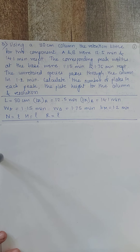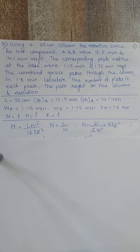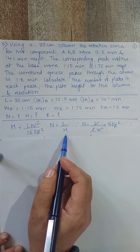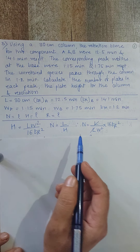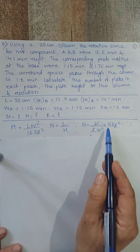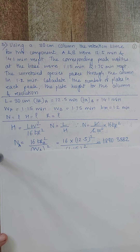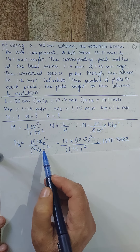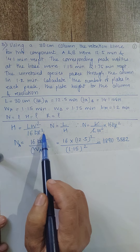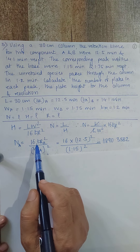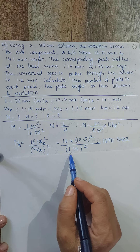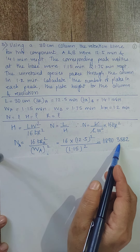Using the derived formula N = 16TR² / W², first find NA: N = 16 × (12.5)² / (1.15)² = 1890.3582. This formula is derived by substituting H = LW² / (16TR²) into N = L/H, canceling L to get N = 16TR² / W².